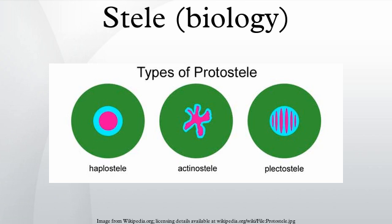This type of stele is primarily found in fern stems today. Dictyostele: if multiple gaps in the vascular cylinder exist in any one transverse section, the numerous leaf gaps and leaf traces give a dictyostele the appearance of many isolated islands of xylem surrounded by phloem. Each of the apparently isolated units of a dictyostele can be called a meristele. Among living plants, this type of stele is found only in the stems of ferns.